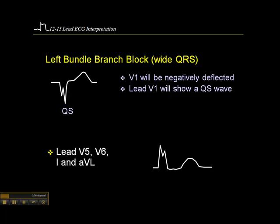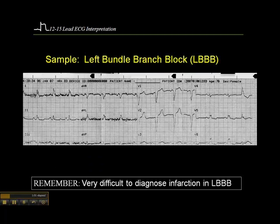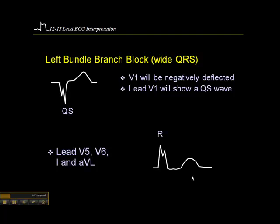In leads V5, V6, and I and aVL, we see an R-wave. I should talk about this because you'll often hear the term 'rabbit ears' to describe bundle branch blocks. We can see rabbit ears in premature ventricular complexes as well, and there are other causes of rabbit ears other than bundle branch blocks.